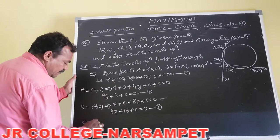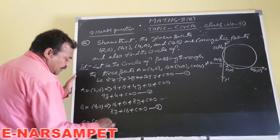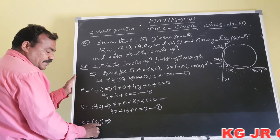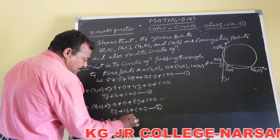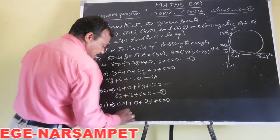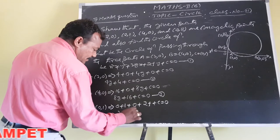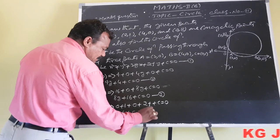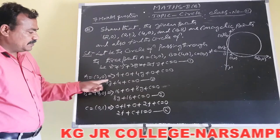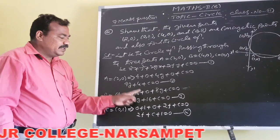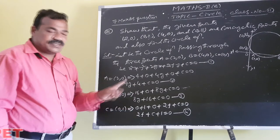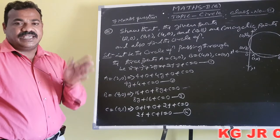Substituting C=(0,1): x=0, y=1. We get 0 + 1 + 0 + 2f + c = 0, giving: 2f + c + 1 = 0. These are three equations with unknowns g, f, and c. Solving these three equations will give the values of g, f, and c.